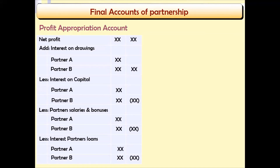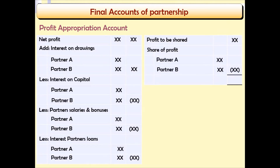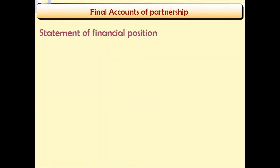After all these deductions, the resulting figure is known as the profit to be shared, which is shared among the partners. The share of profit is divided between Partner A and Partner B, and after sharing, what remains is zero.